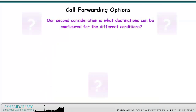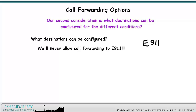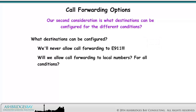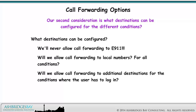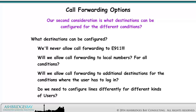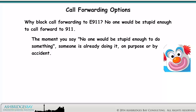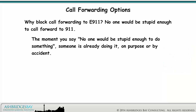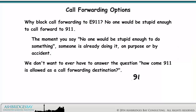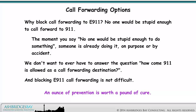Our second consideration is what destinations can be configured for the different conditions. We'll never allow call forwarding to E911. Will we allow call forwarding to local numbers, for all conditions? Will we allow call forwarding to additional destinations for conditions where the user has to log in? Do we need to configure lines differently for different kinds of users? Why block call forwarding to E911? No one would be stupid enough to call forward to 9-1-1 — but the moment you say that, someone is already doing it, on purpose or by accident. We don't want to answer the question of how 9-1-1 is allowed as a call forwarding destination. An ounce of prevention is worth a pound of cure.